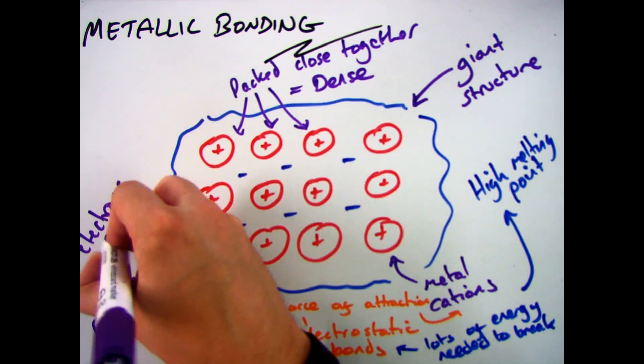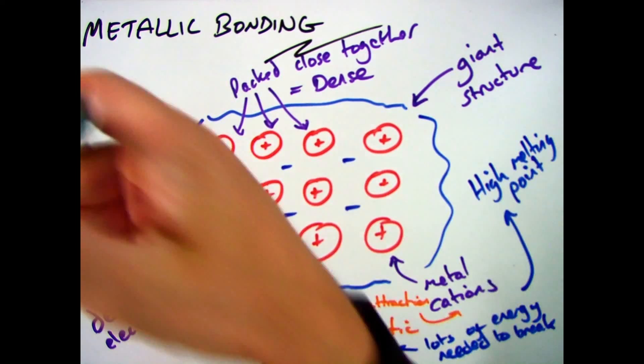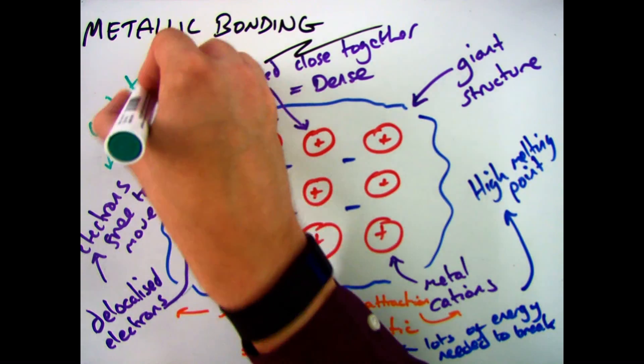And our delocalised electrons are free to move. If they are free to move it means they can carry a charge which means it can conduct electricity.